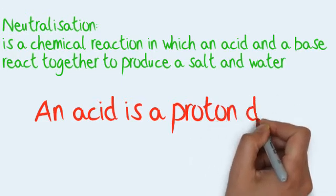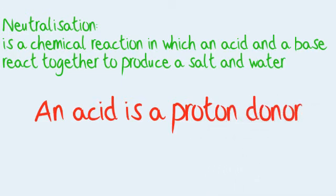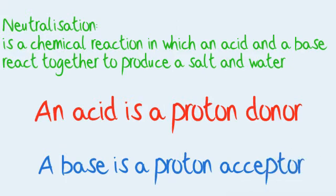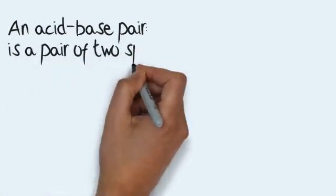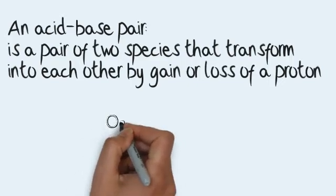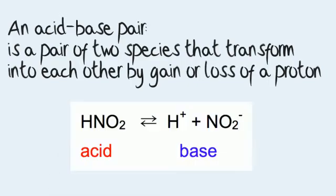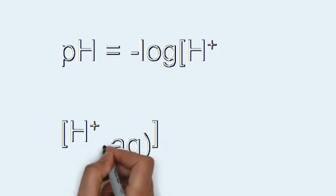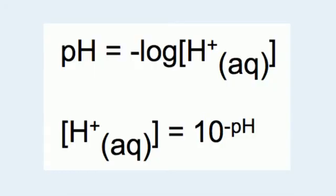Neutralisation: this is a chemical reaction in which an acid and a base react together to produce a salt and water. Remember, an acid is a proton donor and a base is a proton acceptor. An acid-base pair is a pair of two species that transform into each other by gain or loss of a proton. The definition of pH is: pH is the negative log to the base 10 of the concentration of the hydrogen ions.